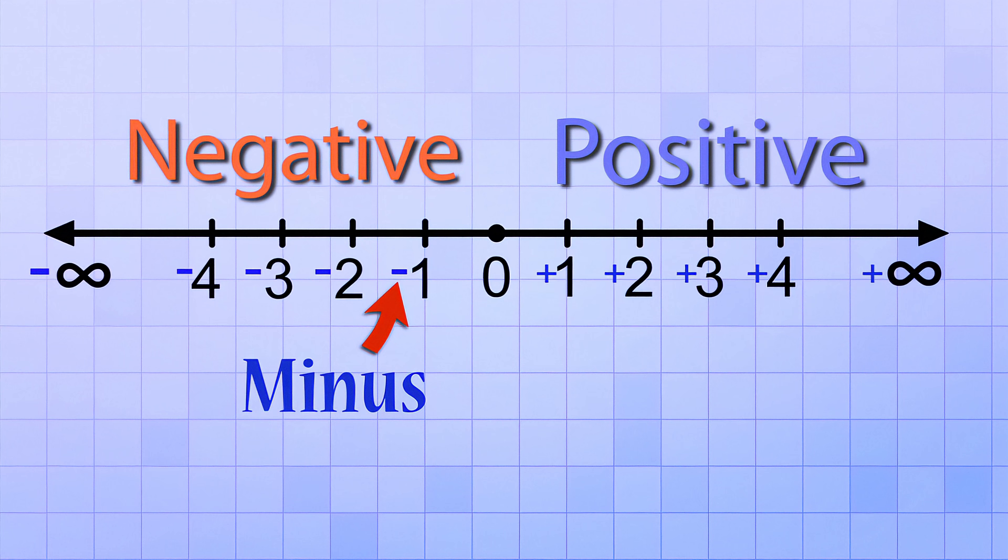In fact, if we wanted to, we could write a positive sign in front of all the positive numbers. But to save time, we just assume that if a number doesn't have any sign in front of it, then it's positive. Positive is the default sign.